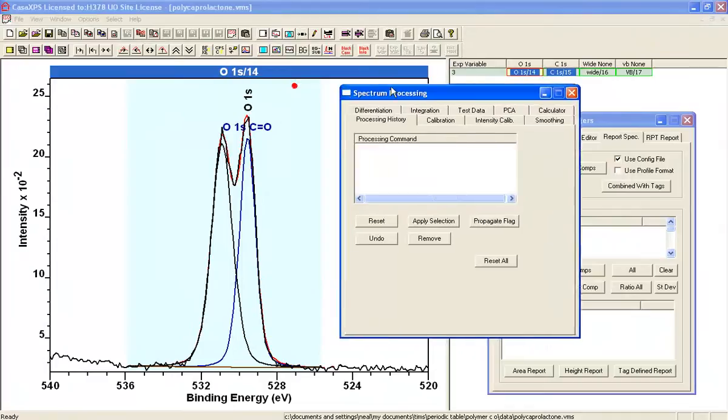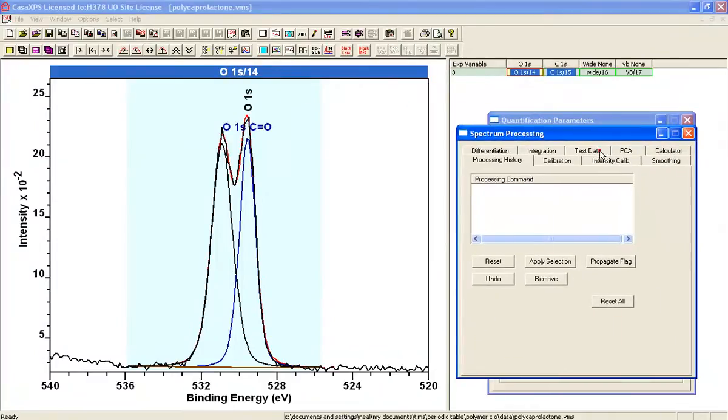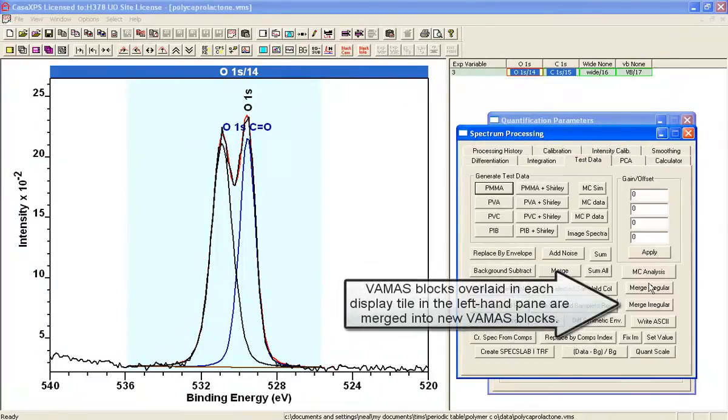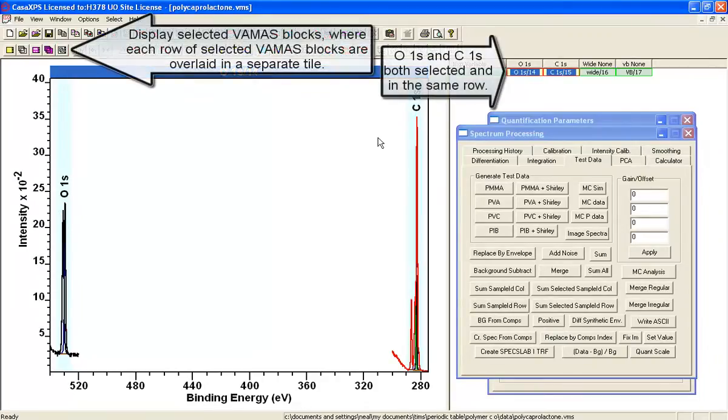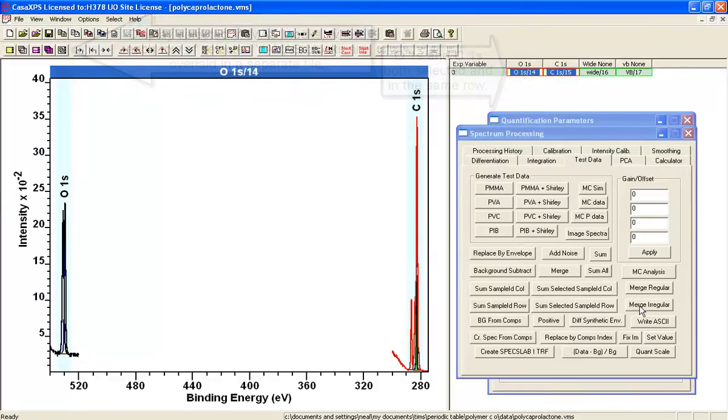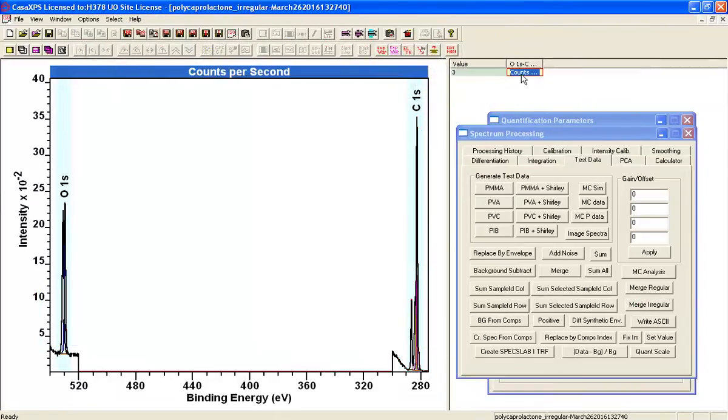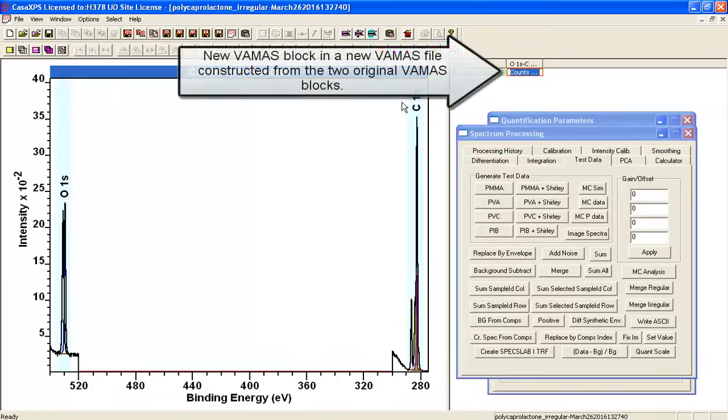I'll do that by bringing up the spectrum processing, the test data tab, and I'm going to merge irregular. What I have to do is first of all display in a single tile the oxygen and the carbon for which I want to create a new VAMAS file. I want to merge them so I have a single VAMAS block that contains the spectra for both of these.